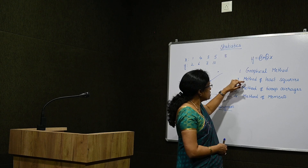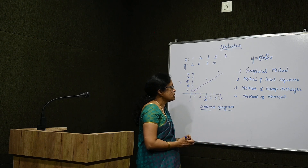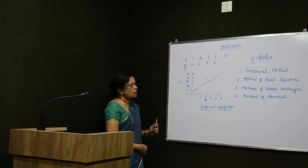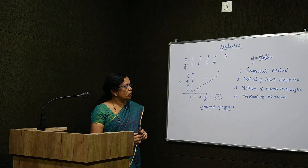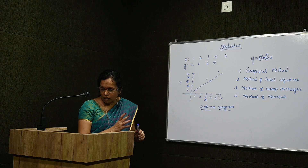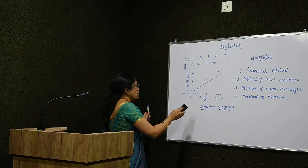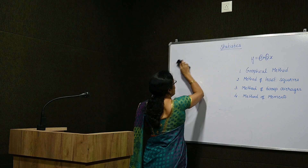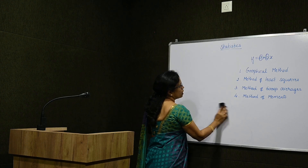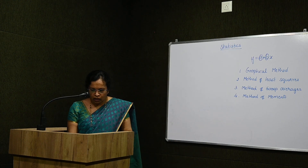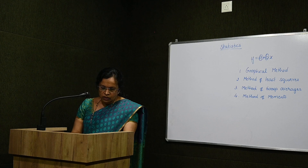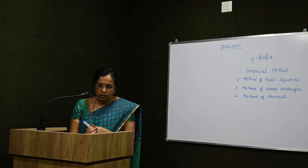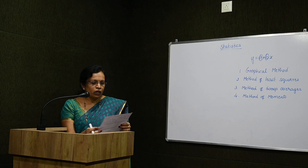Let us take an example so that we can compare the graphical method with the least squares method and find out the values of a and b. Suppose P is the pull required to lift a load W.